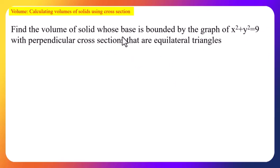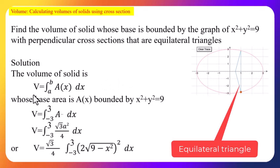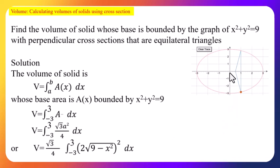Next example: find the volume of a solid whose base is bounded by x² + y² = 9 with perpendicular cross-sections that are equilateral triangles. The graph is a circle, so using V = ∫ A dx, the range of integration is −3 to 3, because the circle has center at the origin and radius 3 — that is, 3 units left and right of the origin.